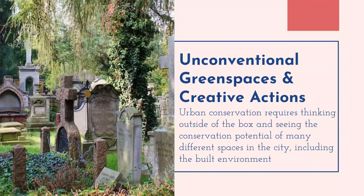Urban biodiversity conservation often requires thinking outside of the box. The typical starting place is spaces that look most familiar — remnant forest patches that survived urbanization or a lake near the urban core. These are undoubtedly important, but they are far from the only spaces with conservation potential. Research has highlighted the importance of spaces like golf courses, cemeteries, and even small roadside gardens for meeting biodiversity goals, as they can support a number of species and make the urban matrix more hospitable. We can also think about redesigning human infrastructure to be more supportive of biodiversity.